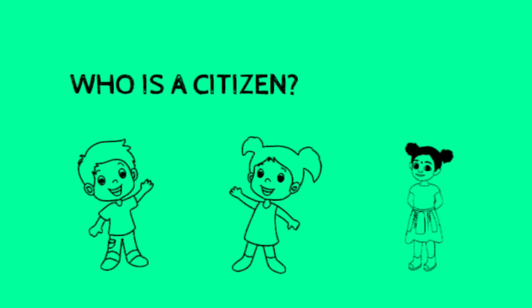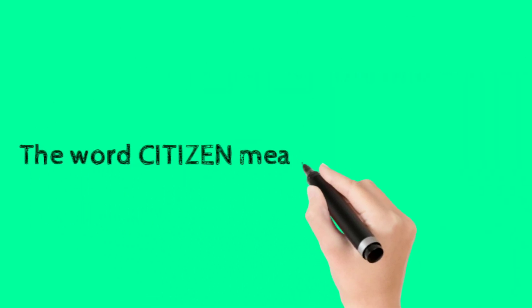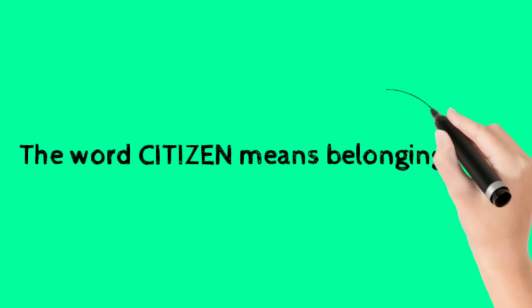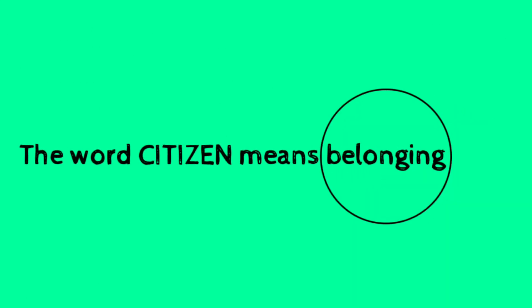So what we normally tell our students, the first thing in terms of understanding the concept of citizenship, is that the word citizen means belonging. That is the key term that you want them to know and understand. Once students begin to understand the concept of belonging, then they are well on their way to understanding who a citizen is. So I repeat: the word citizen means belonging.